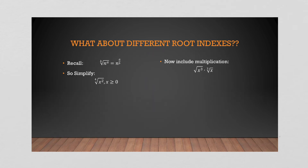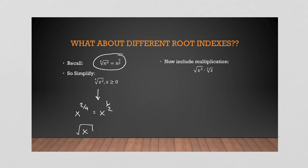What if you have a different root index? How do you simplify something like that? Remember the relationship where you can convert a root into an exponent. So in this scenario, x to the two over four means x to the one half, which is just the square root of x — we just simplify that radical. Now if you have a scenario where we multiply things together but with different root indexes, switch them into exponents and everything starts to make sense. You have x to the three over two times x to the one third.